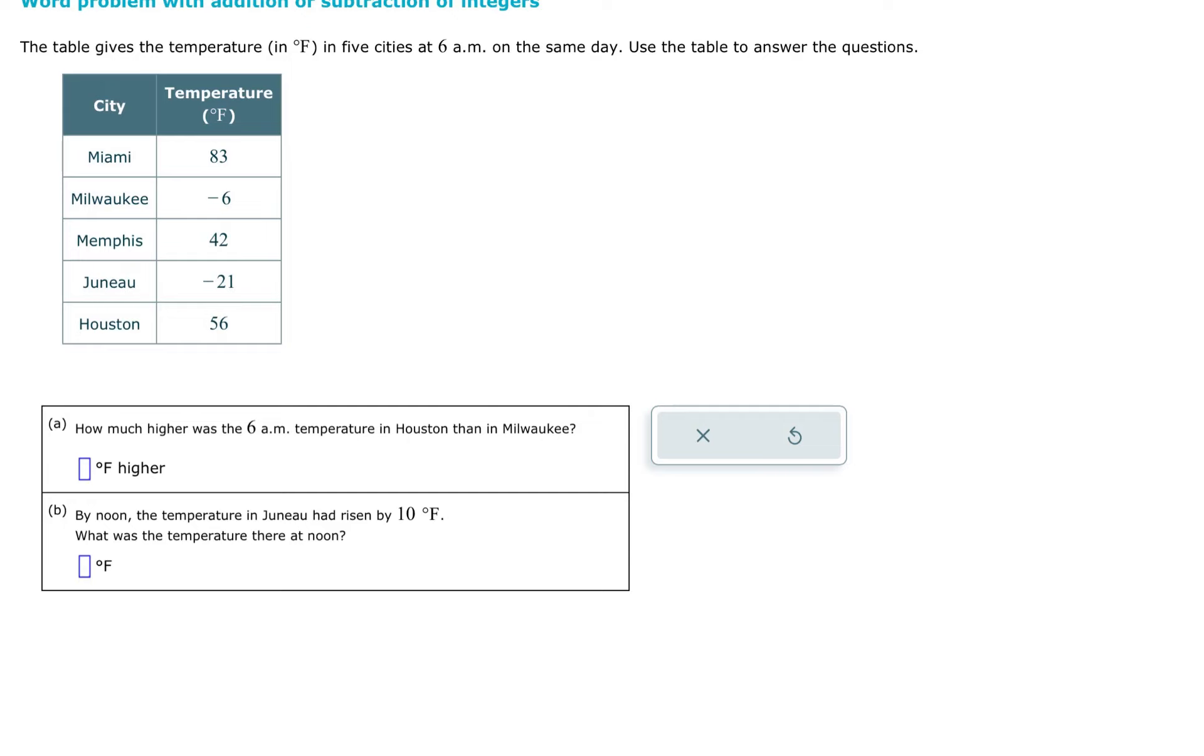Here's another example. The table gives a temperature in degrees Fahrenheit of five cities at 6 a.m. on the same day, and we're going to use the table to answer. Part A says, how much higher was the 6 a.m. temperature in Houston than Milwaukee? So we're doing this one and this one.